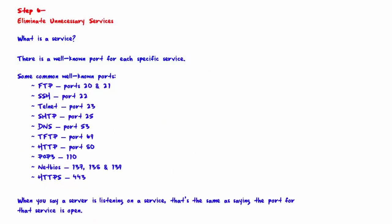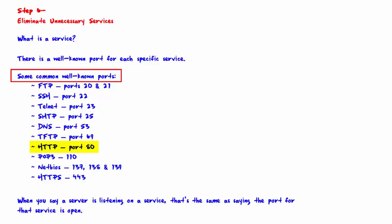There is a well-known port for each specific service. The complete list can be found at www.iana.org. Some common well-known ports: FTP ports 20 and 21, SSH port 22, Telnet port 23, SMTP port 25, DNS port 53, TFTP port 69, HTTP port 80, POP3 port 110, NetBIOS ports 137, 138, and 139, and HTTPS port 443. If you work with TCP/IP at all, these well-known ports should pretty much be memorized. When we say a server is listening on a service, that's the same as saying the port for that service is open.